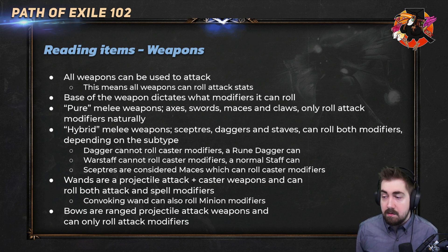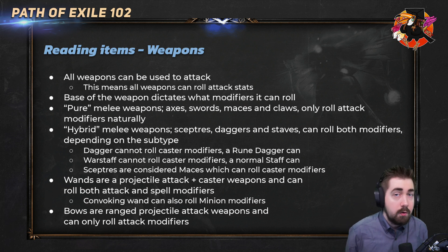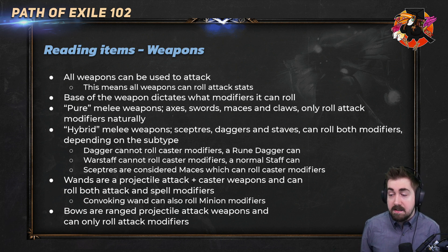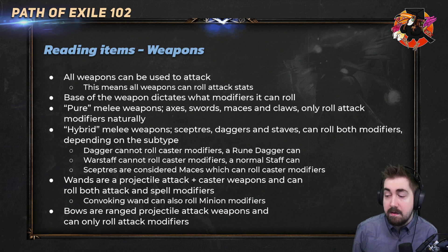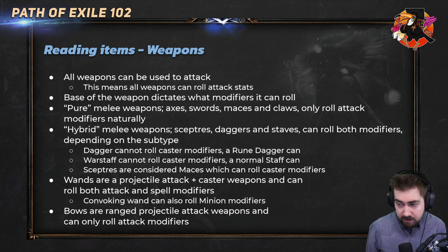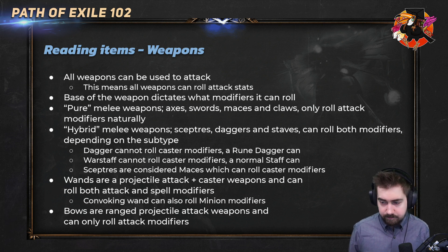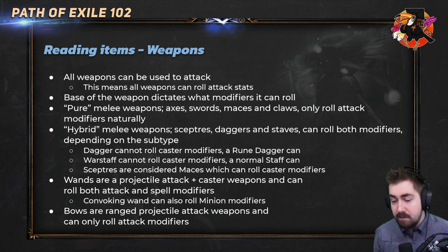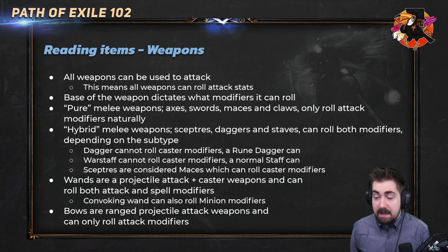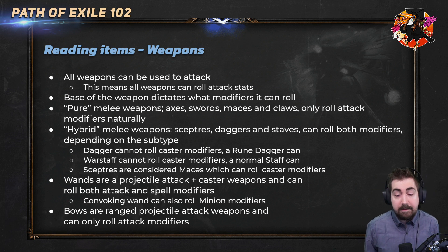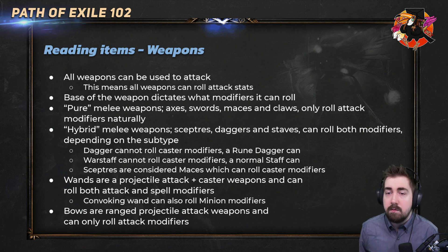There are pure melee weapons — axes, swords, maces, and claws — they only roll attack mods naturally. You can bypass that with essences, but if you craft regularly it cannot roll 60% spell damage. Hybrid melee weapons like scepters, daggers, and staves can roll both modifiers, and wands as well. Some daggers are pure attack daggers, but rune daggers can roll spellcaster mods. Make sure you pay attention to whether it's a rune dagger or war staff, because you could waste currency crafting a staff that can't even hit spell modifiers. Wands are projectile attack and caster weapons and can roll both attack and spell modifiers. The convoking wand can also roll minion modifiers — very unique. Bows are ranged projectile attack weapons and can only roll attack modifiers.